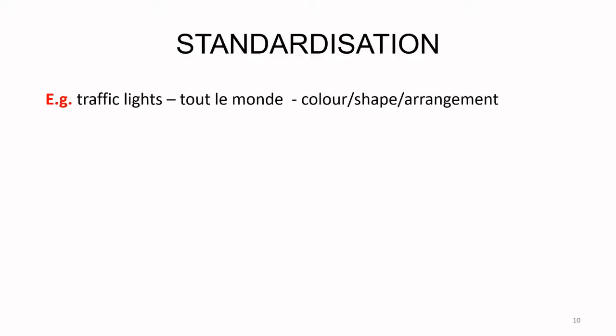A very basic example: traffic lights. The color, shape and arrangement of traffic lights is the same everywhere in the world — it is standardized everywhere, and that is a standard.